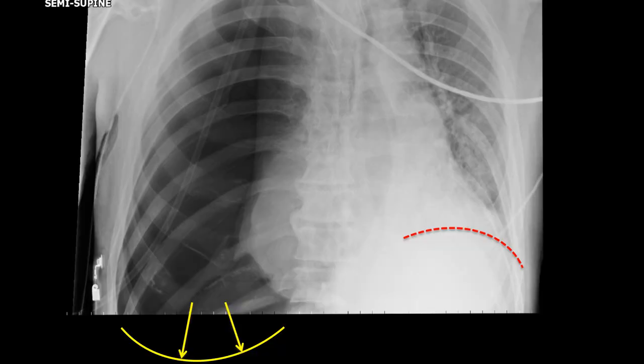If the film were to go a bit lower, the diaphragm would be everted at about this level. This is a tension pneumothorax. Note also the severe mediastinal shift. This was treated immediately with the insertion of a green needle in the second intercostal space, mid-clavicular line.